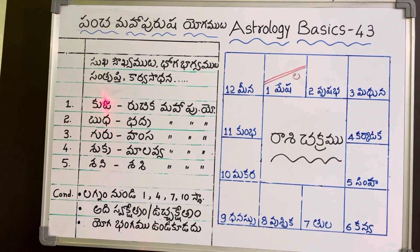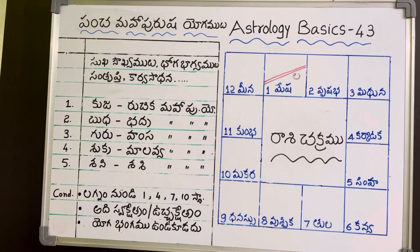This will transition from a 2nd Mahapurushayogam to the 3rd Mahapurushayogam. The Buddha is called Hamsa Mahapurusha Yogam, Malabhyam Mahapurusha Yogam, and Sashi Mahapurusha Yogam.